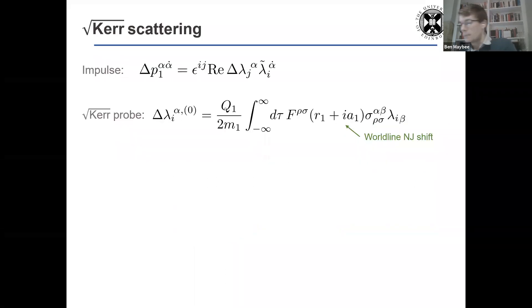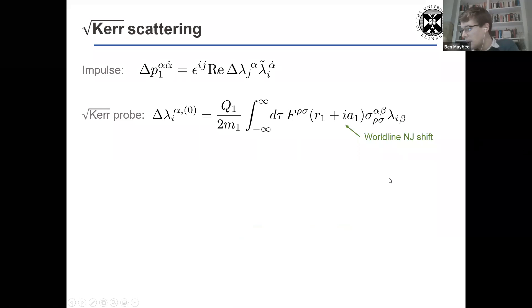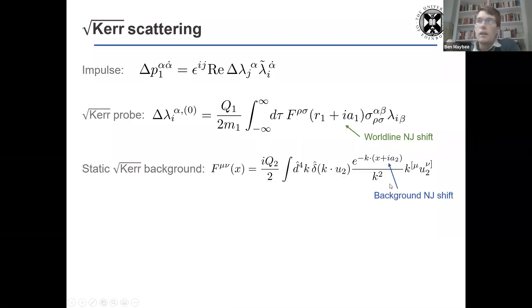So let's now look at something a bit more interesting and look at the scattering of root Kerr off root Kerr. So I'm thinking of a root Kerr probe scattering off a root Kerr background. So the dynamics are in the spinors. So all I have to do is calculate the spinor impulse of the integral over the full dynamic, worldline dynamics, the chiral spinor.